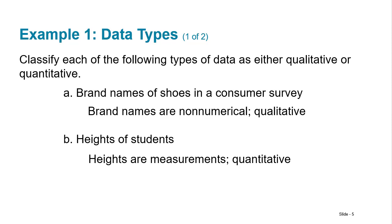Okay so let's see if we can classify each of the following types of data as either qualitative or quantitative. How about brand names of shoes in a consumer survey? And you can see that those are definitely qualitative because they are just names. Heights of students? Quantitative and more specifically would it be continuous or discrete data? Well we measure heights so it would be continuous data.